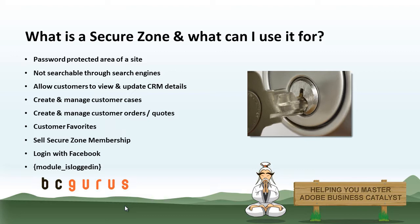The data includes the original web form data that was submitted as well as any correspondence from the admin users that log into the backend and send emails to that customer. This built-in feature would allow you to create a customer support area that enables customers to create support cases. You can also create and manage customer orders and quotes. BC allows you to output order and quote history details on a site to a customer when they are logged into a secure zone. Customer favorites — you can add the favorites feature to your site to encourage personalization. Visitors can add many different content types to their favorites list including products, FAQs, web app items, news items, events, and more.